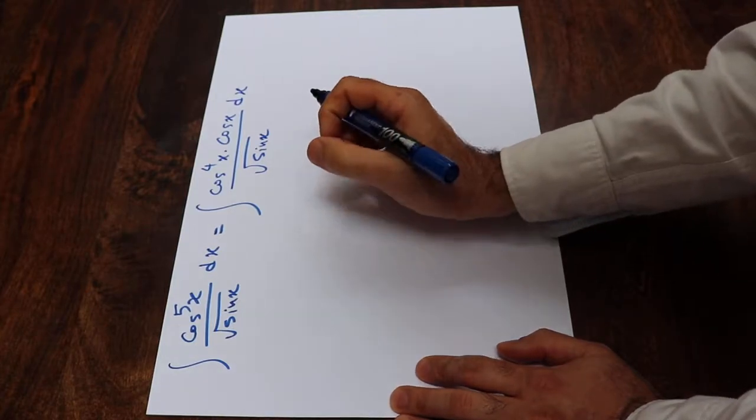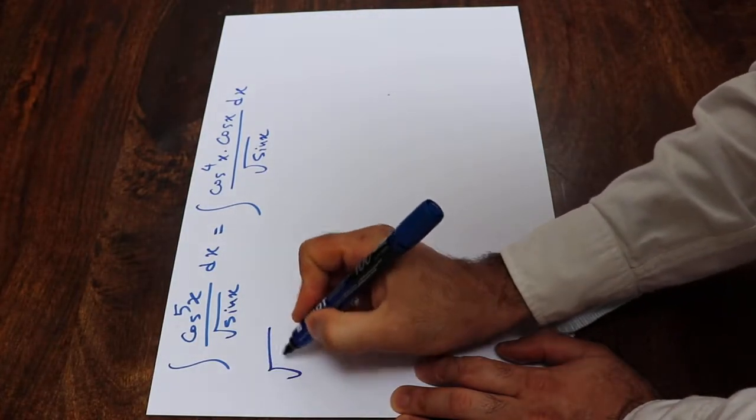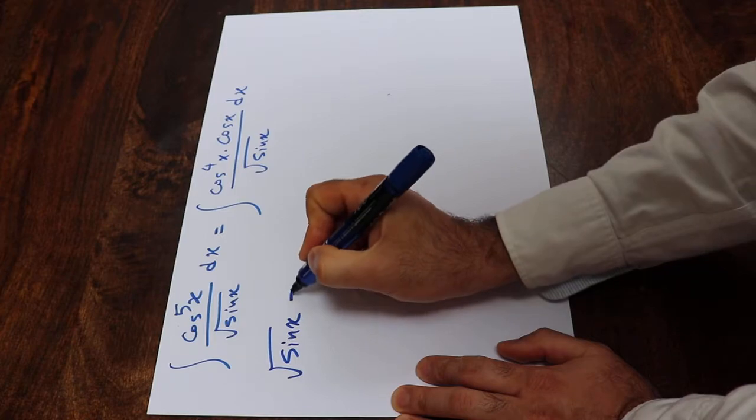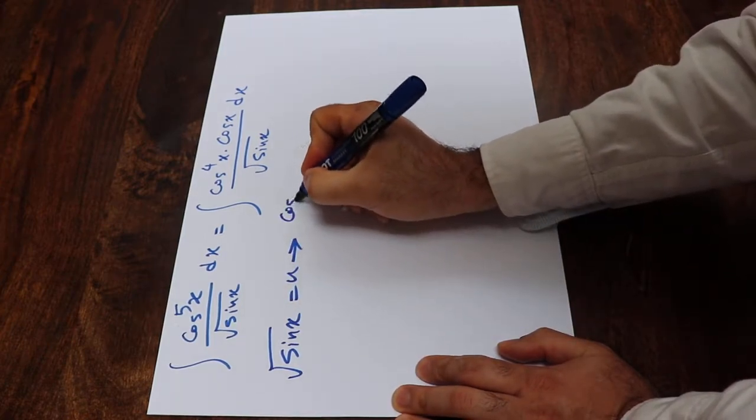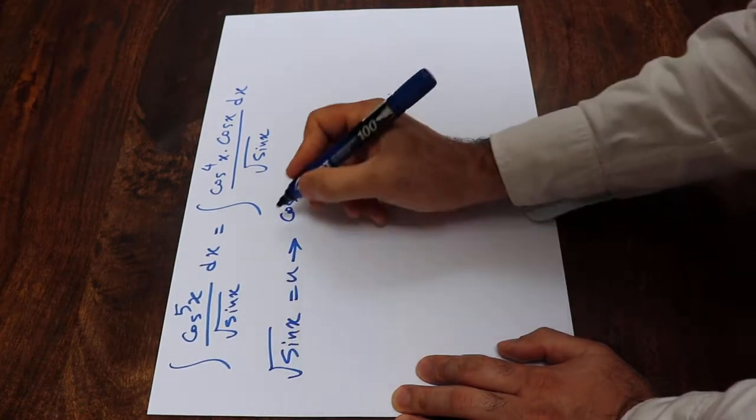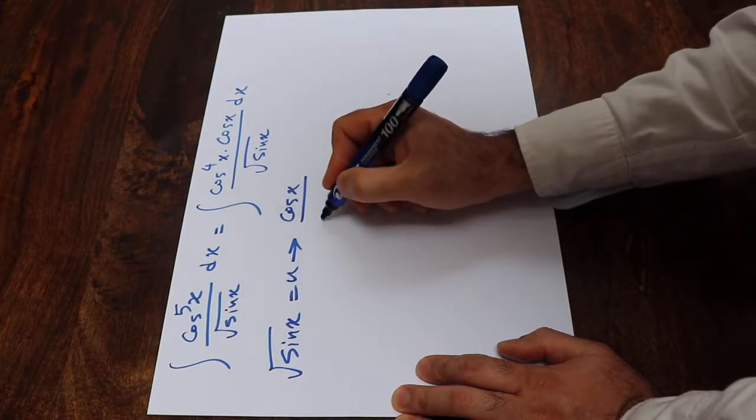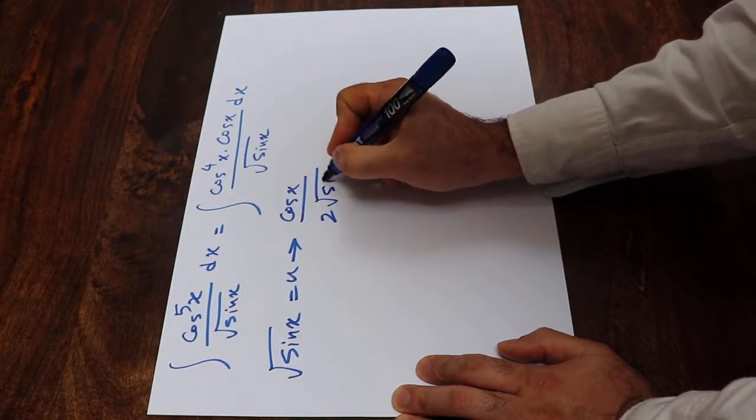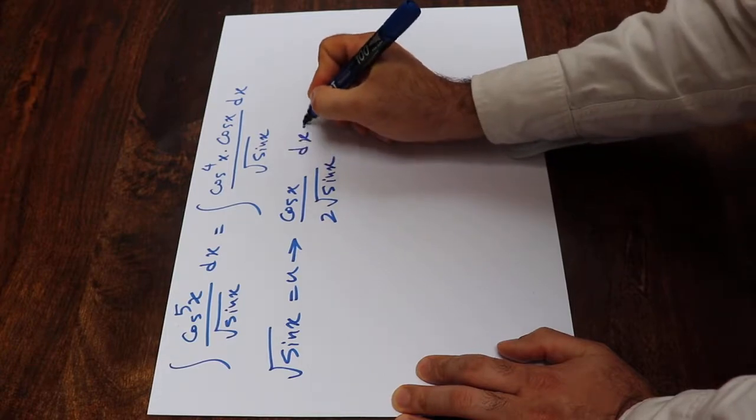To solve this integral, you need to use a substitution rule. If you define square root of sine x as u, let's take the derivative from each side of this equation. The derivative of square root of sine x will be equal to cosine x divided by 2 square root of sine x dx equals du.